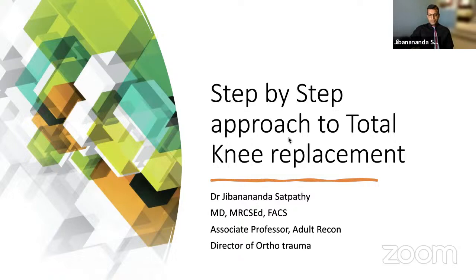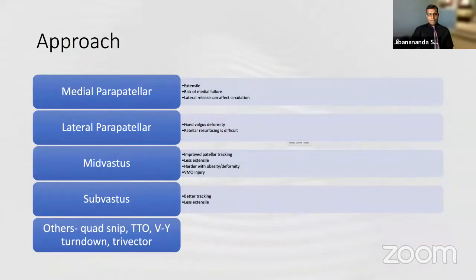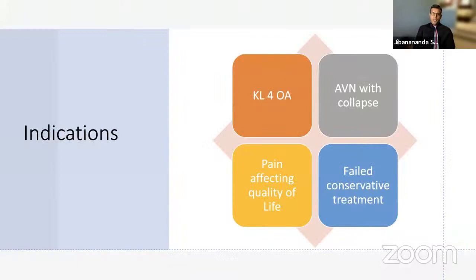Starting with the basics: indications. For me, the minimum indication is KL4 osteoarthritis — it's important to have bone-on-bone. There are cases where arthritis is not bone-on-bone, so decision-making is key. AVN with collapse also qualifies. Pain must be affecting quality of life and activities of daily living. If you don't have pain, just having arthritis does not require a knee replacement. Conservative treatment with various modalities should be attempted prior to considering knee replacement.